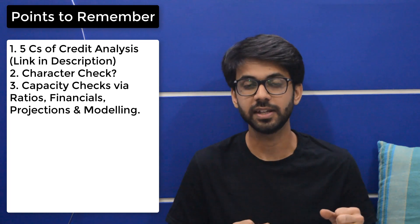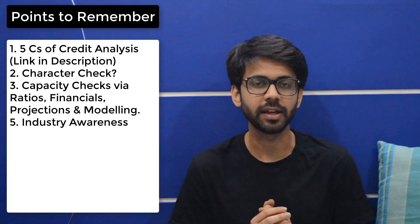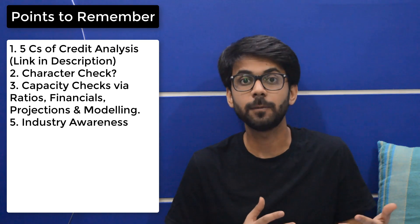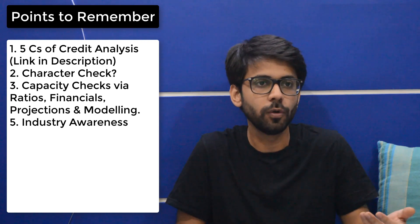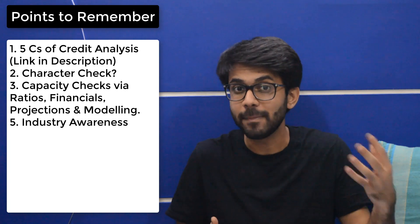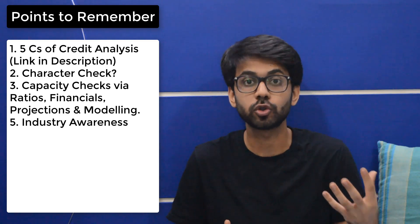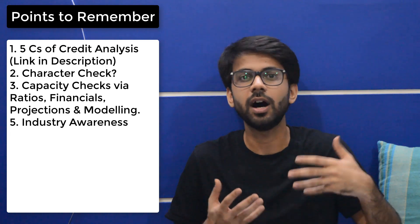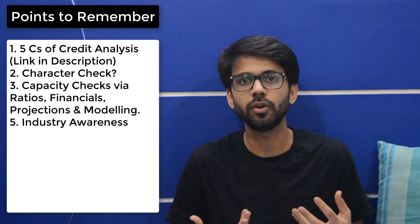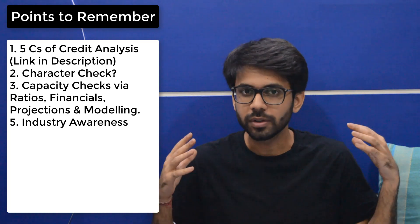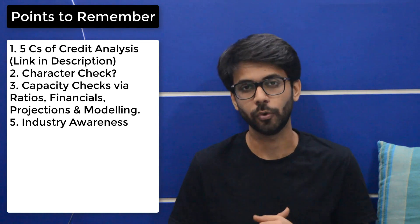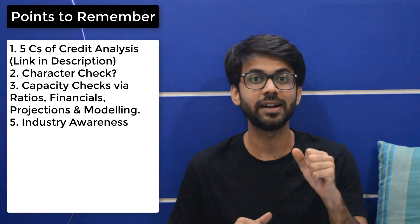The second thing you need to be aware of under this C is the industry — how industries work, which are common for the profile you are going into. Credit analysis has multiple profiles: it starts from the bottom, like a loan for small equipment or an EMI loan. Many NBFCs hire CAs for vetting those loans too. Then you move up the ladder to housing loans or loan against property, then working capital, then term loans. Depending on the level and industry, you need to be very well aware of what is happening around it.